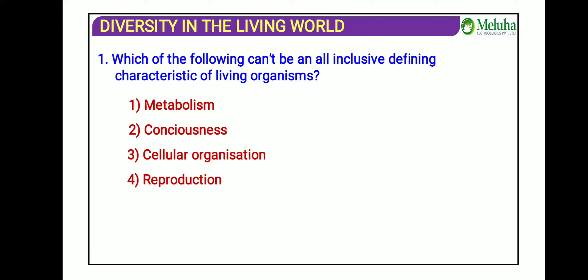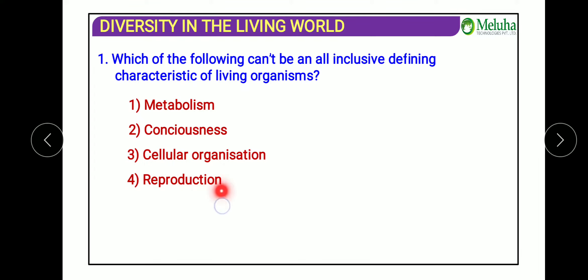Among the four, metabolism, consciousness, and cellular organization are defining features because they are shown only by living organisms. Reproduction, however, cannot be a defining feature because some species are unable to reproduce — such as non-fertile individuals — yet we still consider them living organisms. So the answer is reproduction.